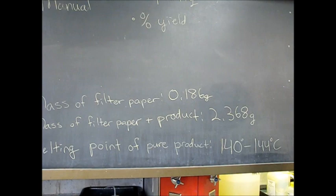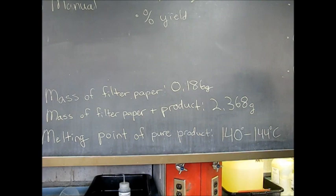So this is our data that we got. Mass of filter paper was 0.186 grams. Filter paper and the product was 2.3680 grams.